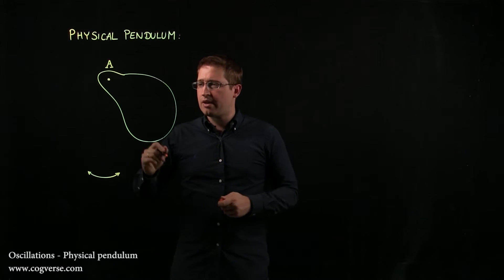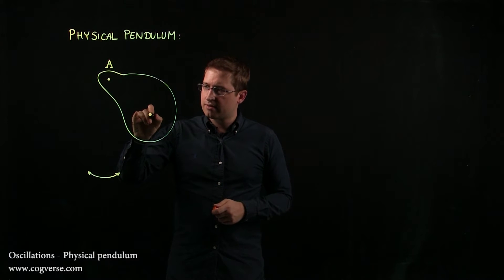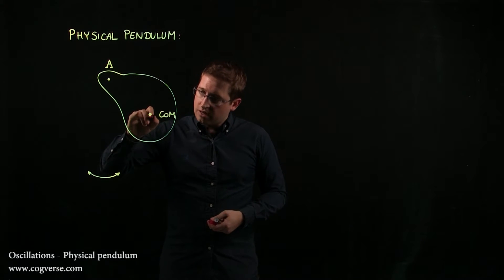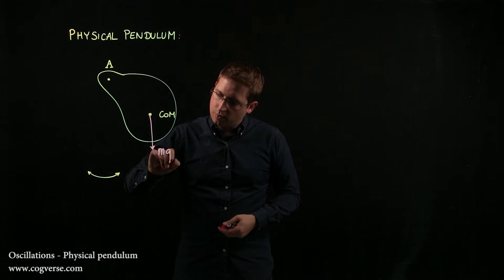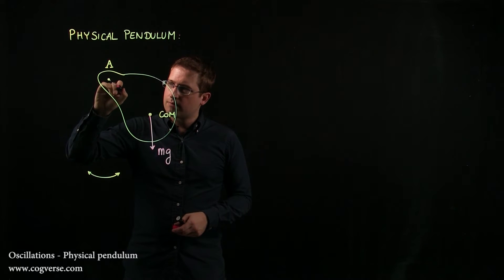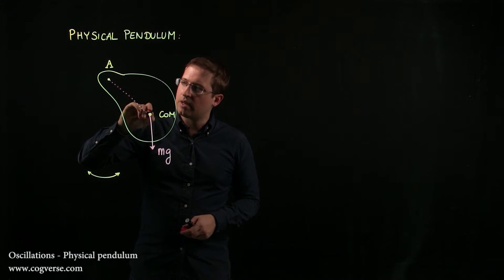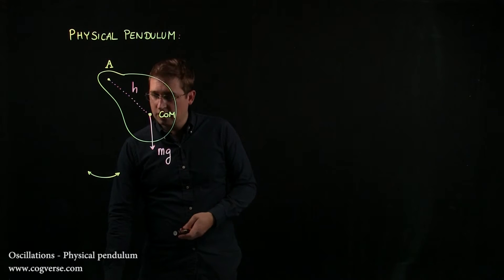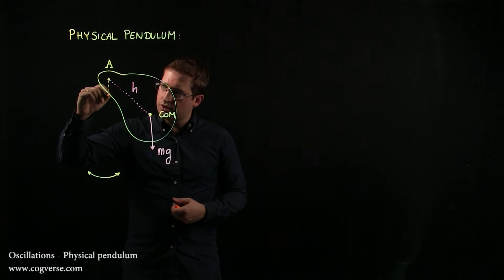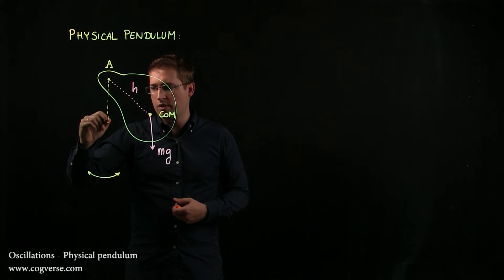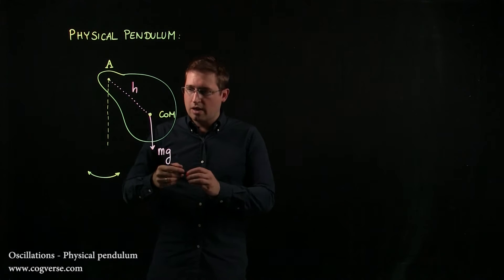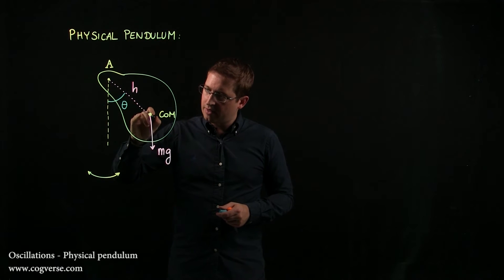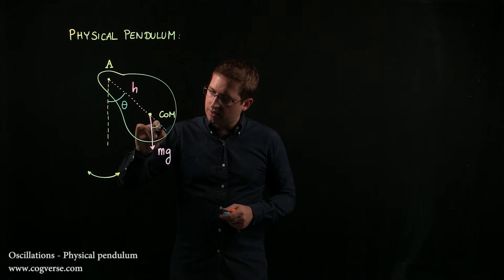And in a physical pendulum, what's going to matter is the center of mass, because you know that the center of mass is where the weight force is applied. And therefore you know that here you have weight. In addition, the distance between the pivot point and the center of mass, labeled h, is also important. And of course, any angle for the oscillations is going to be measured with respect to the vertical. And it's actually worth noting right away that if this is an angle theta, then this here is also theta.